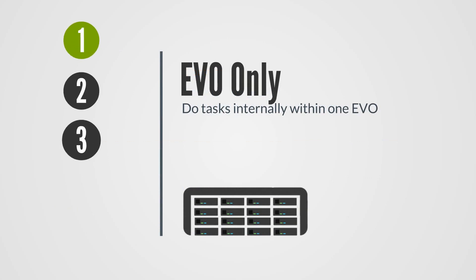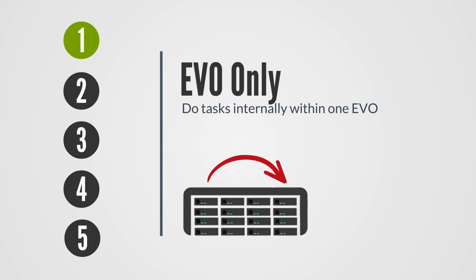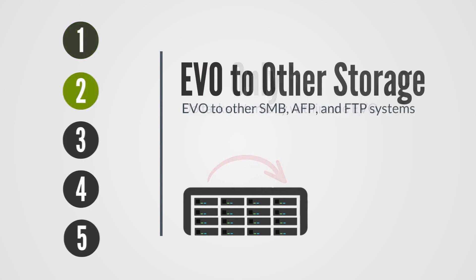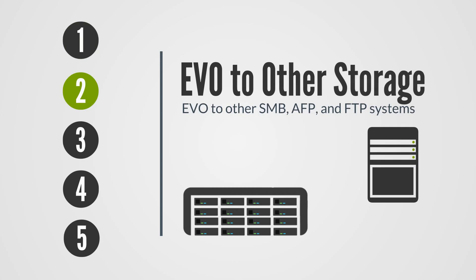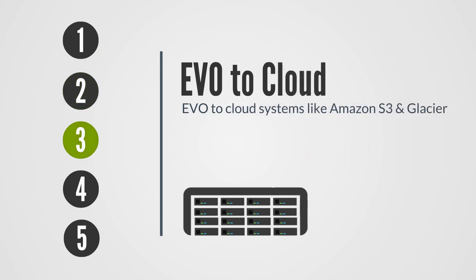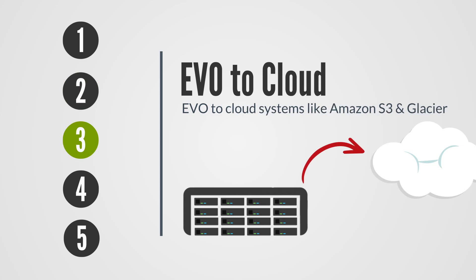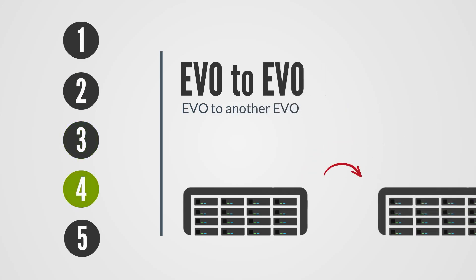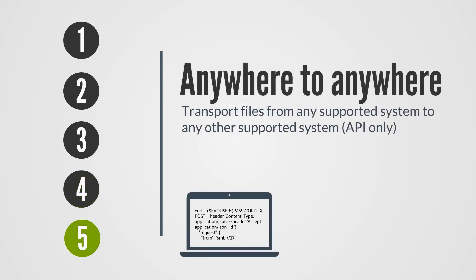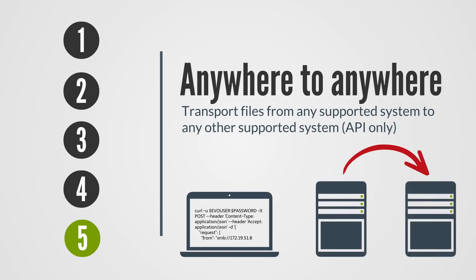Slingshot offers several paths for transporting files. For example, Slingshot can run tasks inside just your one Evo. You can also have Slingshot transfer files from Evo to other kinds of servers, including FTP systems, or automatically send files to cloud storage like Amazon S3, or you might have two Evos transferring files to each other. And in an API-exclusive path, Slingshot can direct your transfers from a supported system to any other supported system, even if none of the files are on Evo.